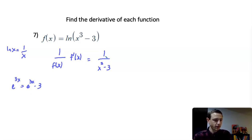We use that same concept, so it's 1 over the function times the derivative of the function. So the derivative of x to the third minus 3 is going to be just 3x squared.